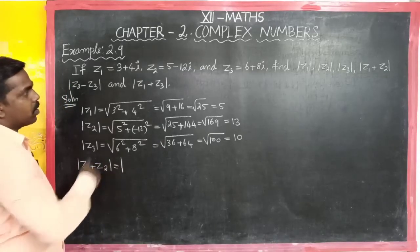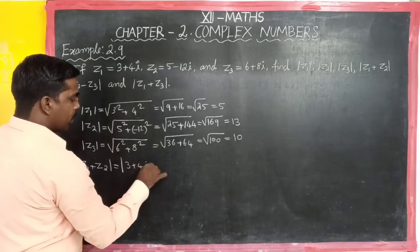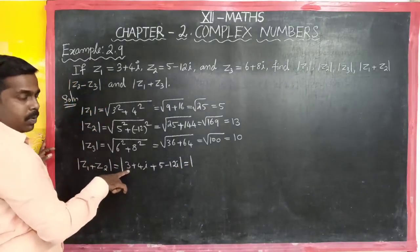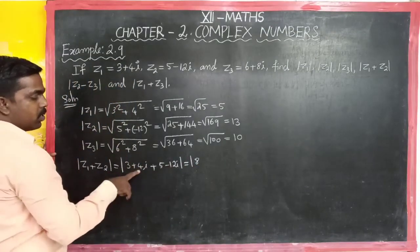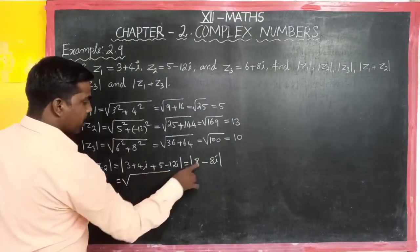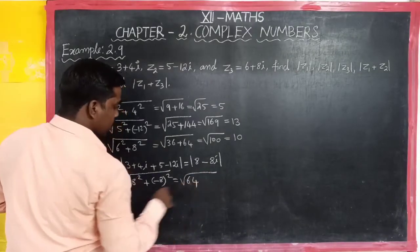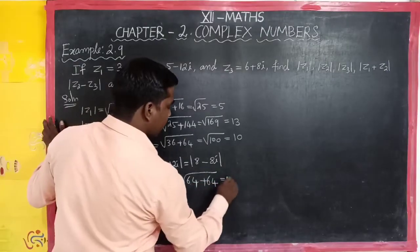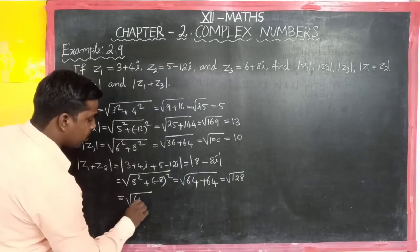Next, modulus of z1 plus z2. We substitute z1 value 3 plus 4i and z2 value 5 minus 12i. Add real parts: 3 plus 5 equals 8. Add imaginary parts: 4 plus minus 12 equals minus 8. So we get 8 minus 8i. The modulus is square root of 8 squared plus minus 8 squared — square root of 64 plus 64 — square root of 128, which equals 8 root 2.